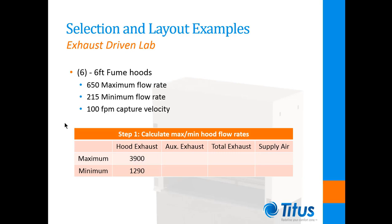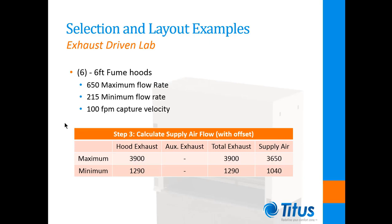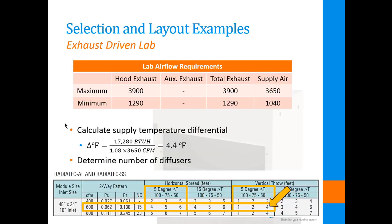The first example has six 6-foot fume hoods. The maximum exhaust flow rate for all hoods combined is 3,900 CFM and the minimum flow rate is 1,290 CFM. The minimum exhaust from the hoods exceeds the minimum air change requirements of 500 CFM, so no additional exhaust is required. To maintain negative pressurization we'll maintain the supply offset of 250 CFM. The result is 3,650 CFM as a maximum supply flow rate and 1,040 CFM as a minimum supply airflow rate. At the maximum flow condition a temperature differential of just under 5 degrees is needed to maintain space temperature.